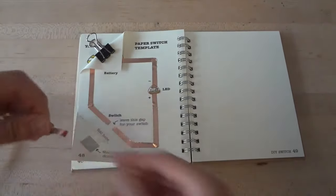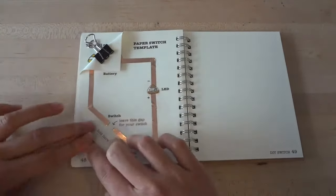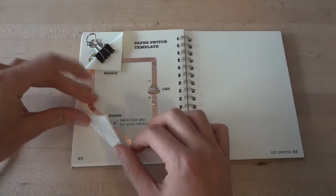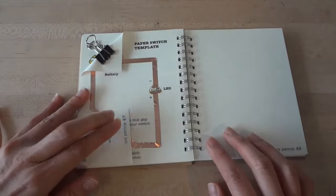To make a more permanent switch, we can tape copper tape over the flap that corresponds with the gap in your circuit. Now, when you fold the bottom corner of your page, you close the gap in the circuit and you turn your light on, making a switch.